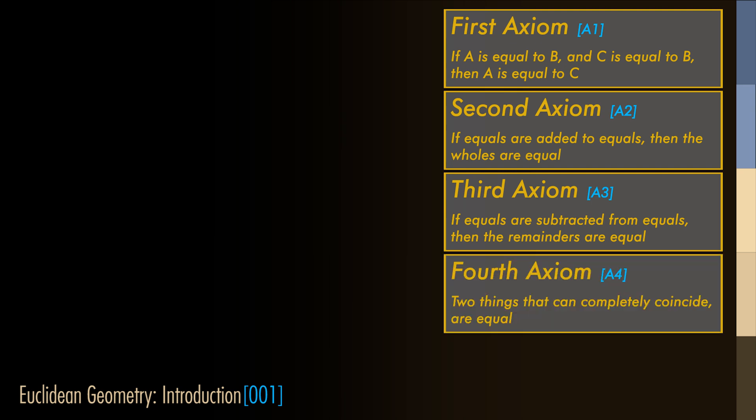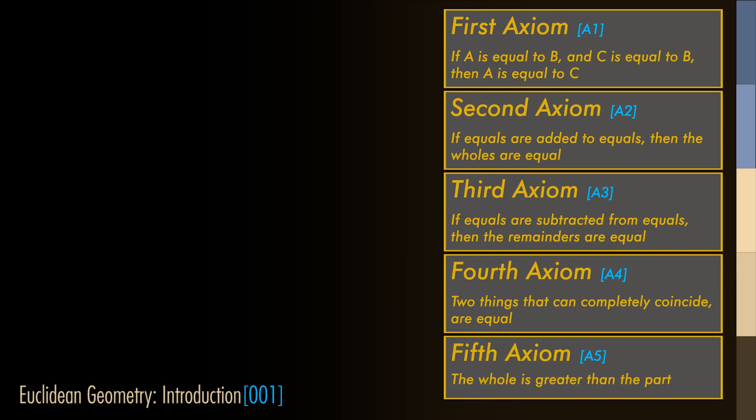The fourth axiom states that if two things completely coincide with one another, then those two things are equal to one another. And the last axiom, the whole is greater than the part.